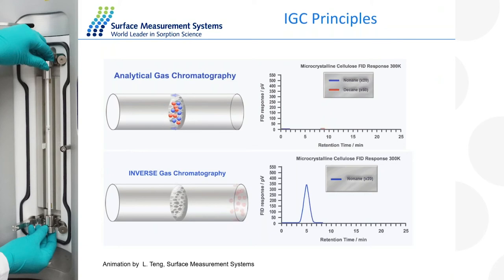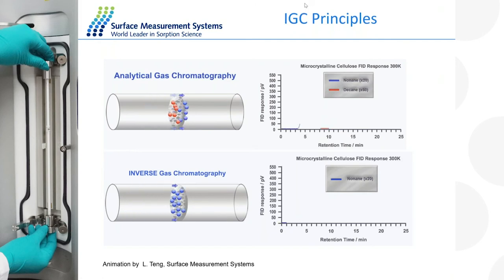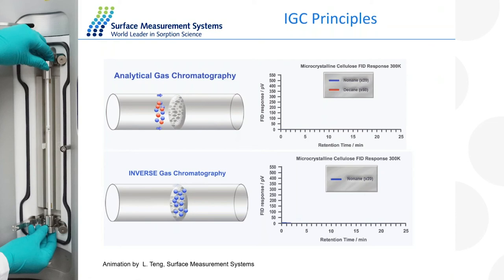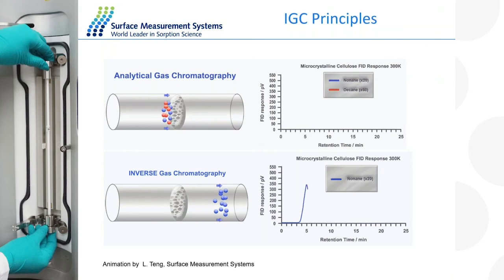In inverse gas chromatography it's quite different. The column contains your solid — the material you want to characterise. Rather than injecting an unknown vapour phase into the GC instrument, we inject a known molecule. We are reversing the roles between the known and unknown phases. In inverse gas chromatography, we have an unknown solid — in today's case almost certainly a polymer — and we pass known vapour phase molecules through the column using a helium carrier gas. These could be hydrocarbons like octane or ethanol, or any vapour phase molecule you like.